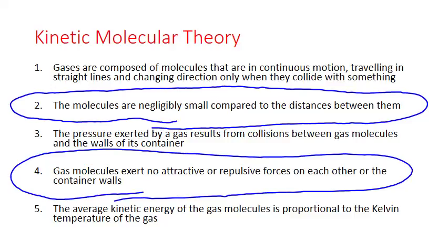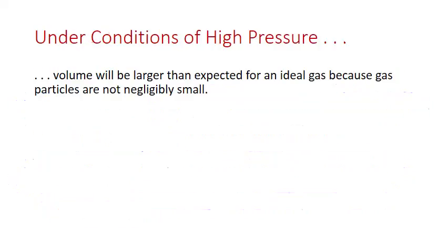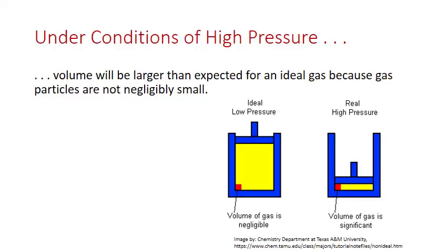Under certain conditions, these two postulates will not hold true. The first condition is that of high pressure. At high pressure, the volume a gas occupies will be larger than expected for an ideal gas because the gas particles are no longer considered negligibly small compared to the distances between them. So at high pressure, gases can be compressed, pushing the particles close together and decreasing the distances between them. At this point, those gas particles occupy volume and that volume is significant compared to the overall volume of the gas.